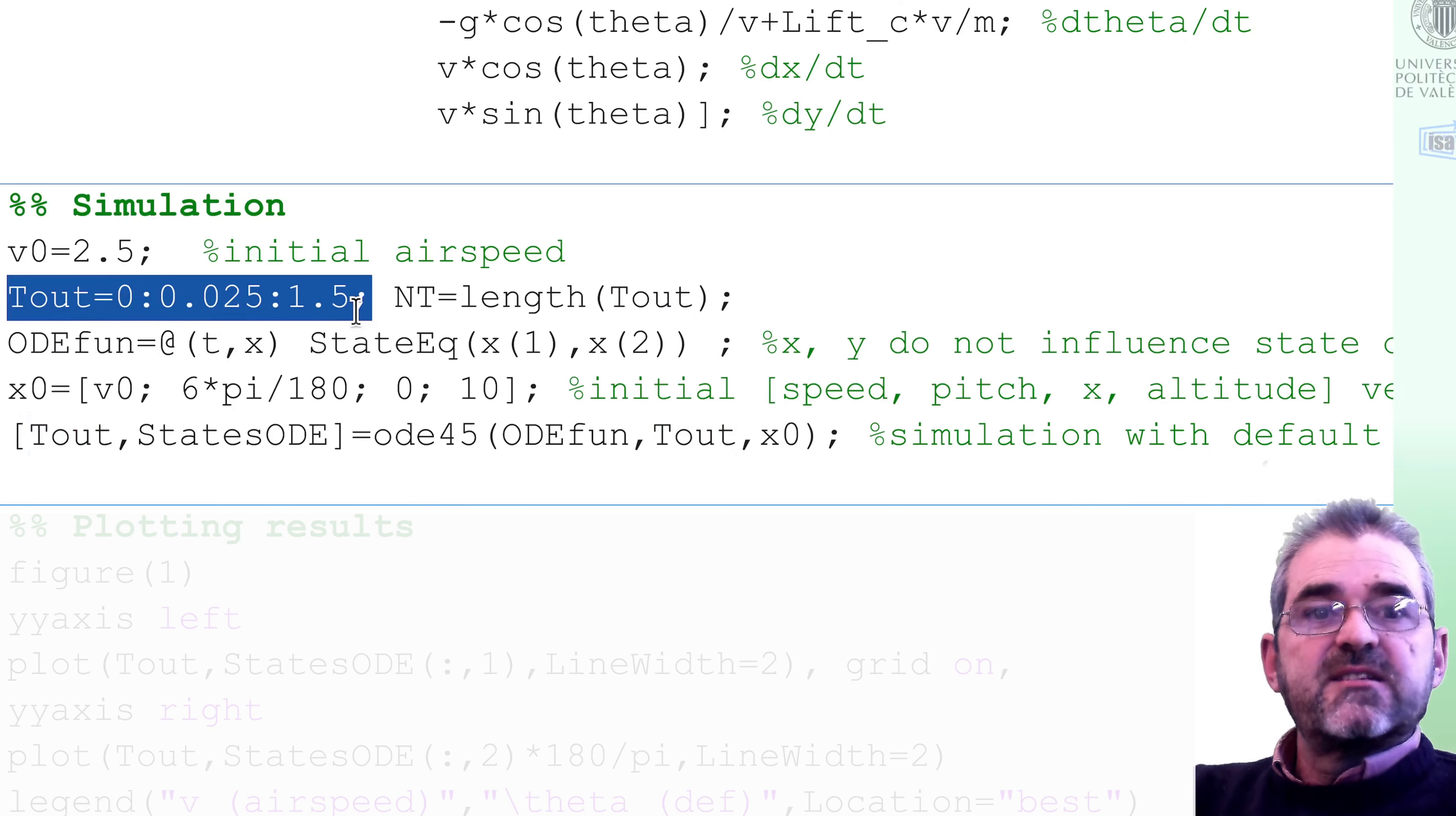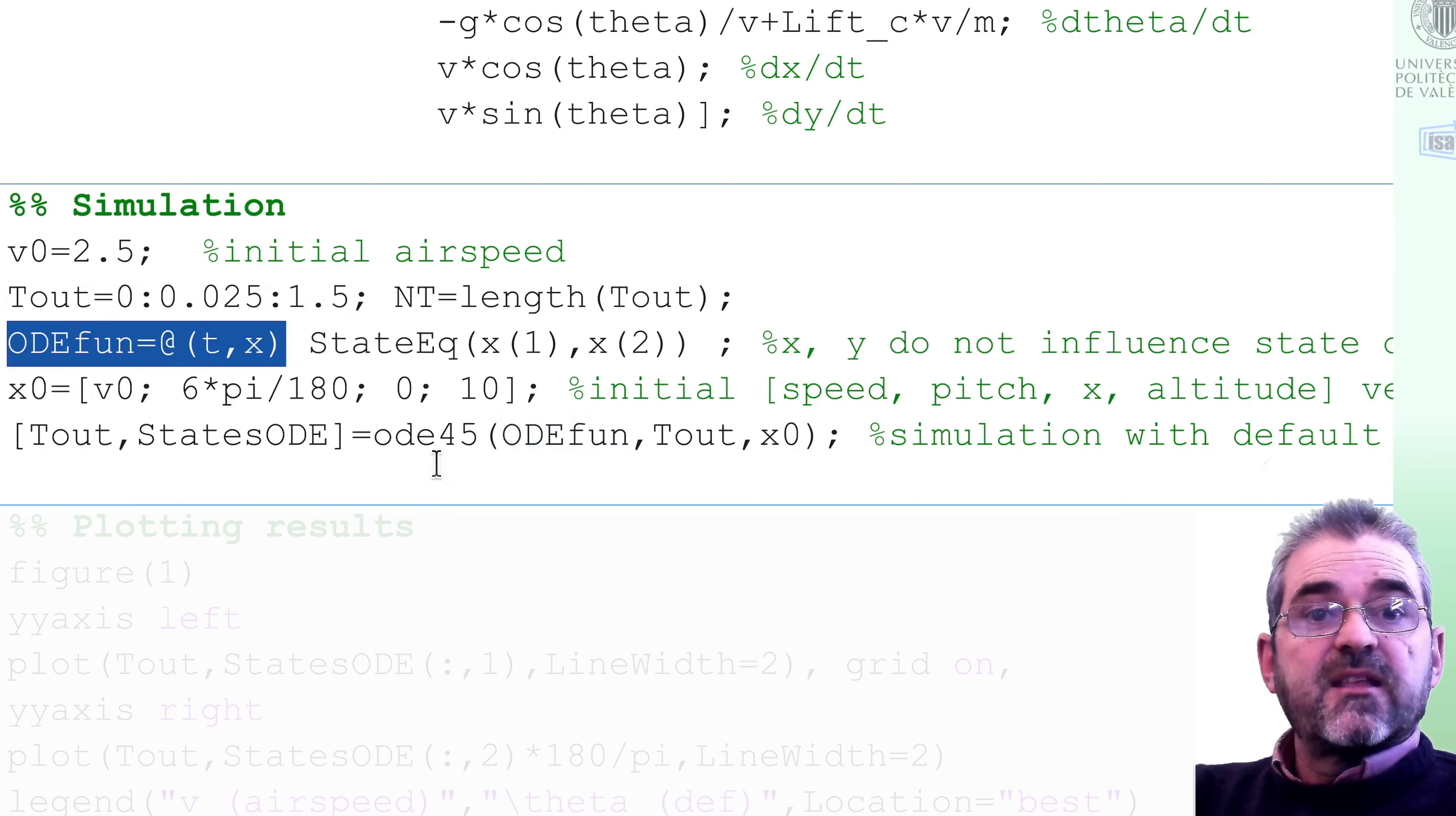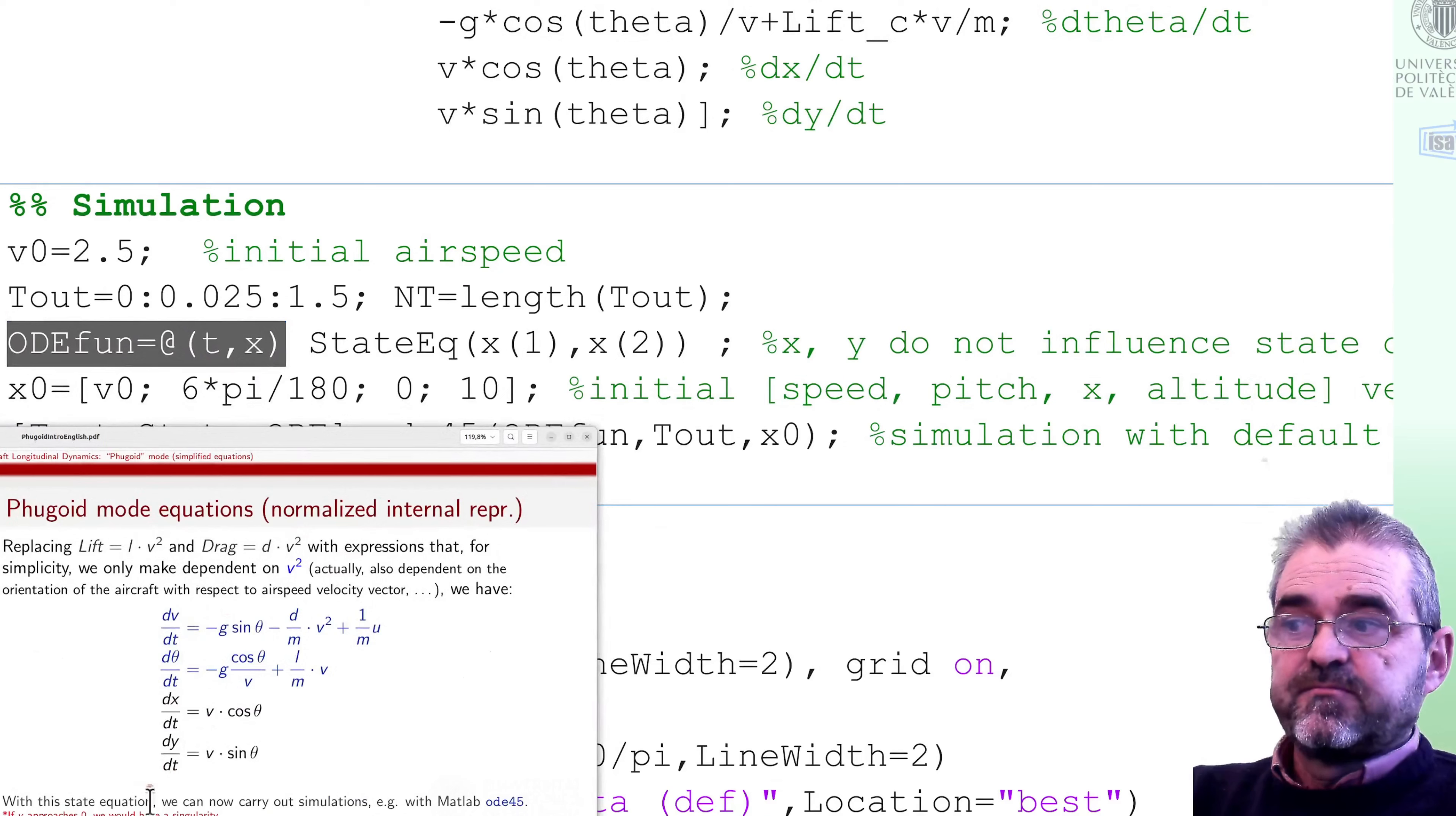And I wish a simulation frame for a later animation every 25 milliseconds. And the most important argument is this ODEFUN, which is a function that must take as arguments the clock, lowercase t, and the state, a four-dimensional vector with the result of the integration of these four derivatives.